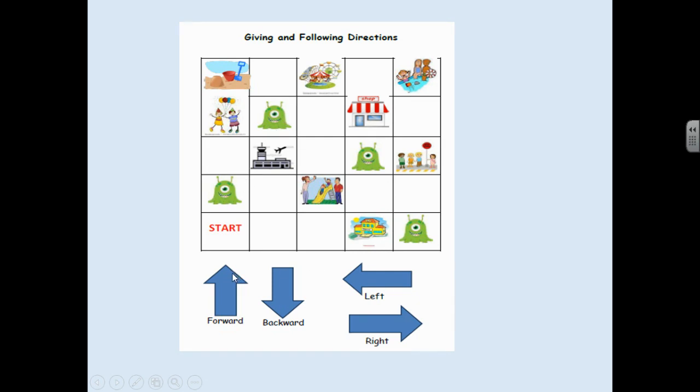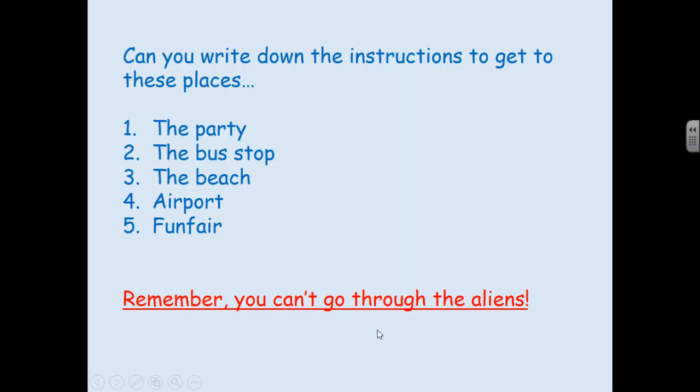And you're using the language forward, backward, left and right. So what you're going to do is, can you write down the instructions to get to these places? So it's the party, the bus stop, the beach, the airport and the funfair. Remember, you can't go through the aliens.